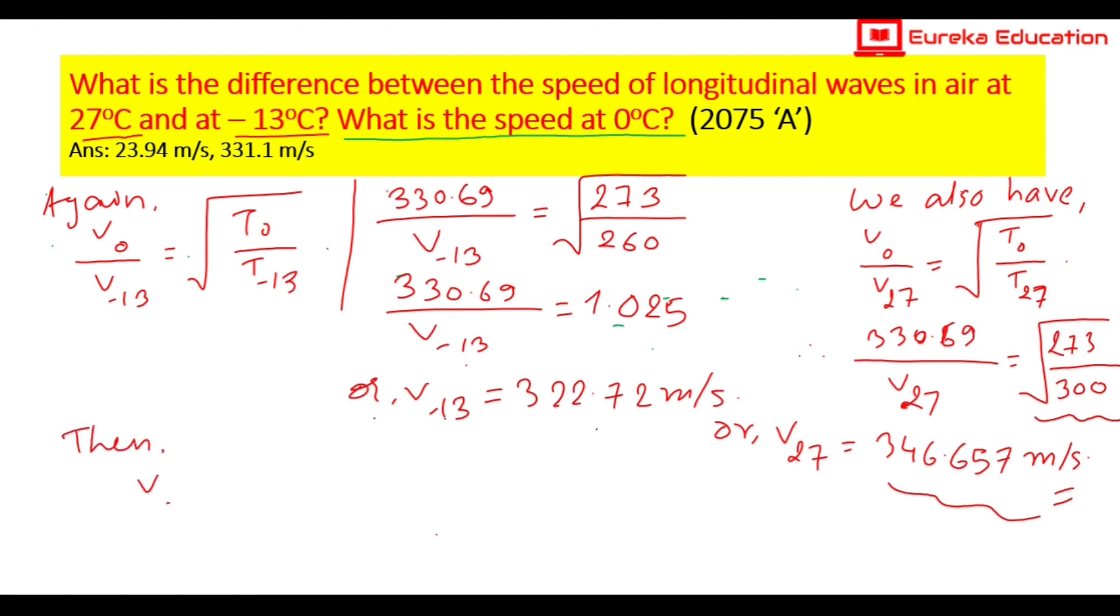Now we need to find delta V, which is velocity at 27 degrees C minus velocity at minus 13 degrees C. So we calculated 346.657 minus 322.72, which equals 23.937 meters per second.